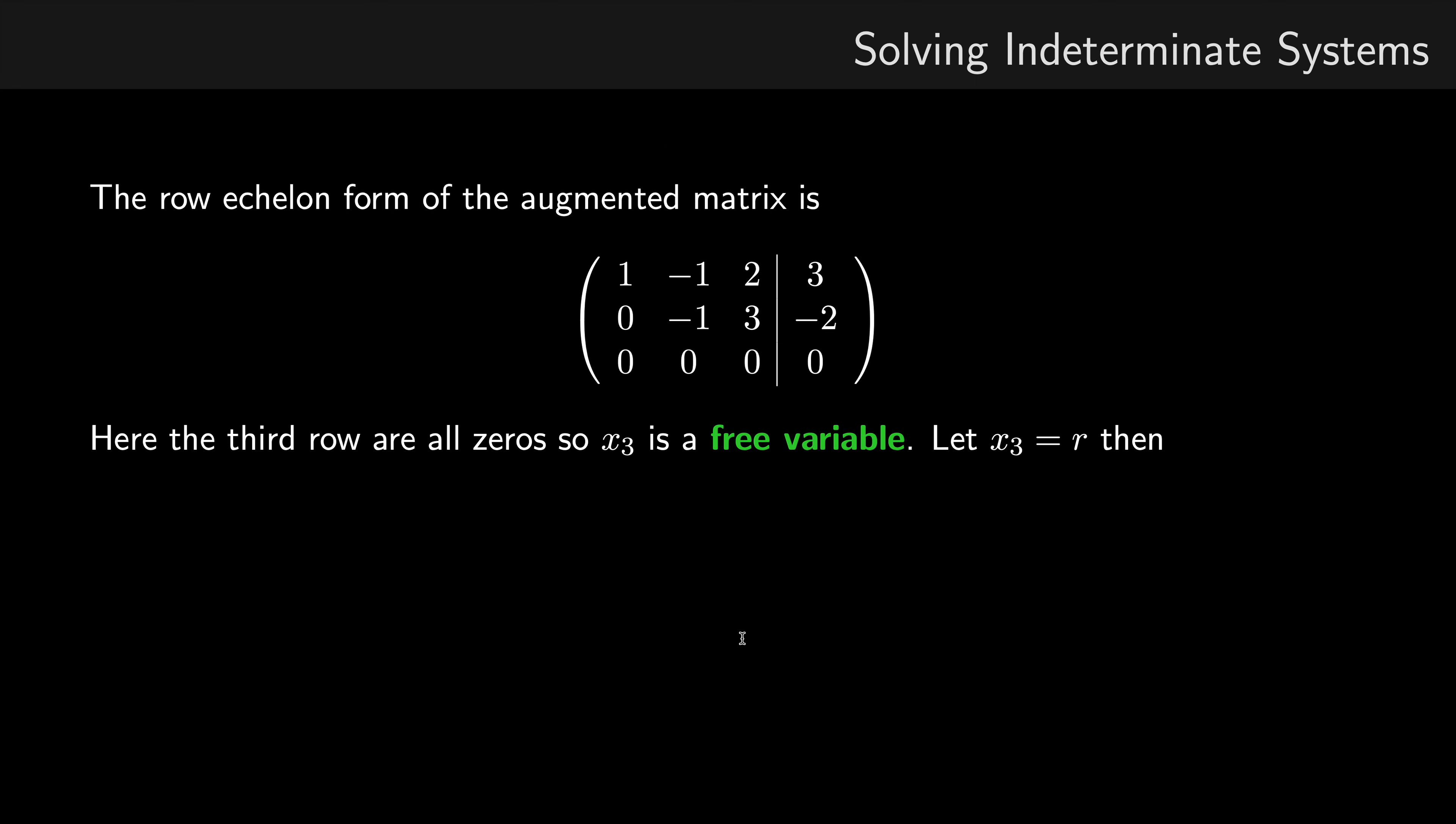So here's the row echelon form of the augmented matrix, and you can see we have a row of all zeros. So this is an indeterminate system and has an infinite number of solutions. Now the third row are all zeros, so we know that x3 is a free variable.